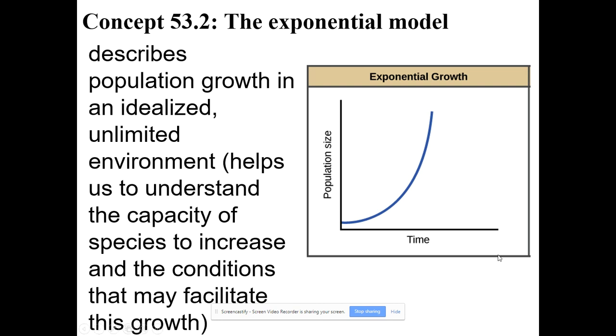We're looking at population growth today, and we're going to look at two mathematical models. The first one is called the exponential model, and the curve that you'll see with an exponential model looks like a J-shaped curve. So as time goes on, the population increases exponentially. This doesn't really happen exactly like this in nature. This is an idealized curve for an unlimited environment. An unlimited environment means that there's no predators, lots and lots of resources, and waste isn't building up at all.